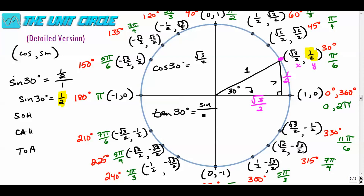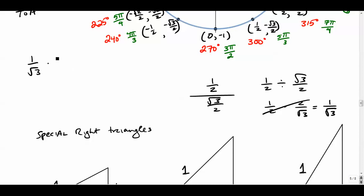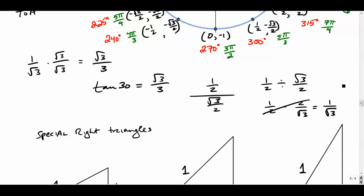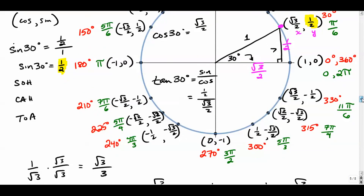For tangent, it's defined as sine over cosine. The tangent of 30 degrees is 1 half over radical 3 over 2. Simplifying: keep 1 half, switch to multiplication, flip radical 3 over 2 to get 2 over radical 3 — the 2s cancel, leaving 1 over radical 3. We rationalize by multiplying by radical 3 over radical 3, giving radical 3 over 3. So the tangent of 30 degrees, or pi over 6 radians, is radical 3 over 3.